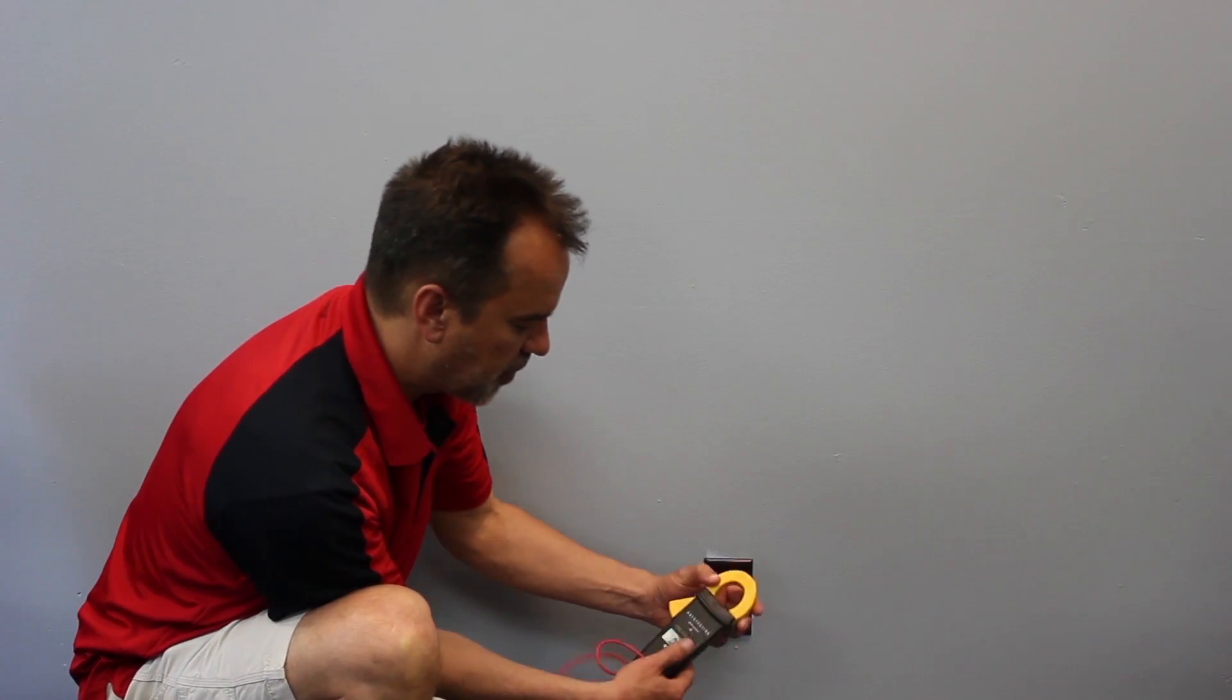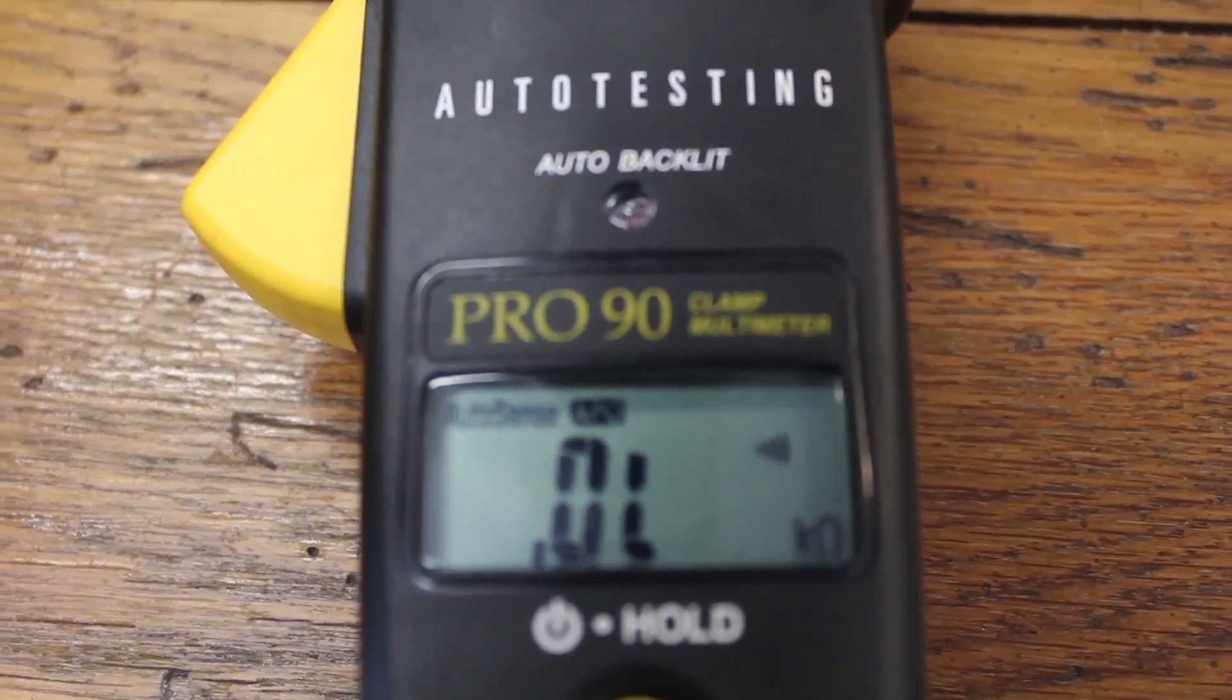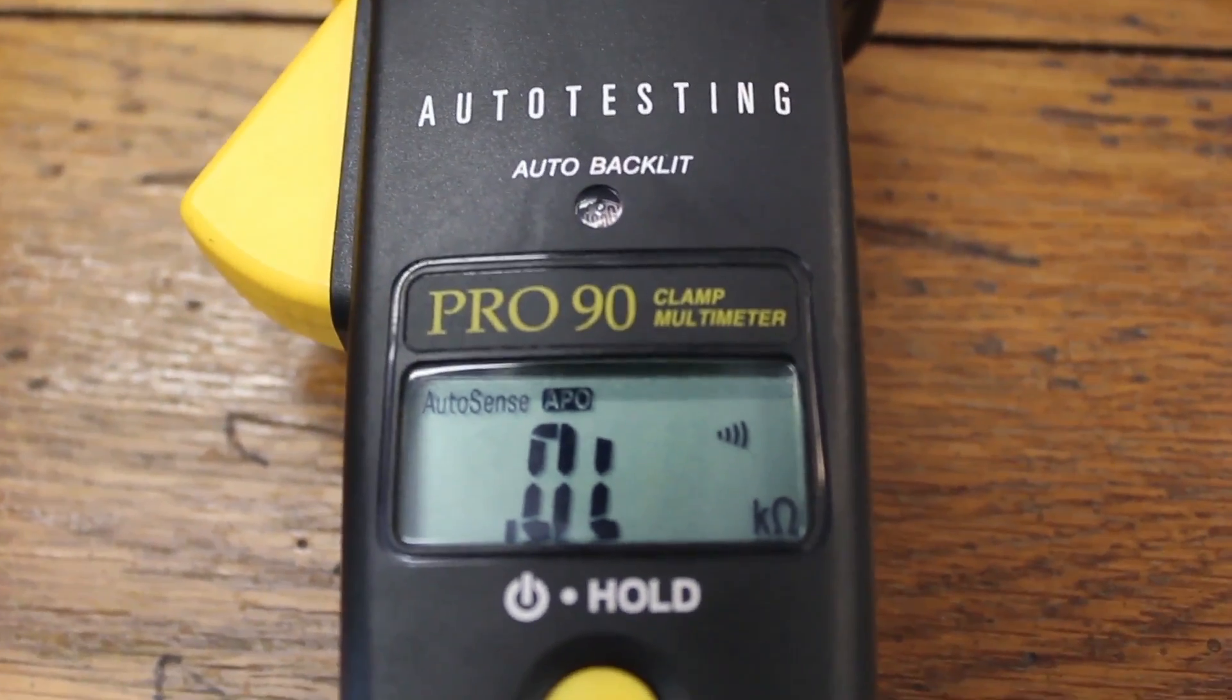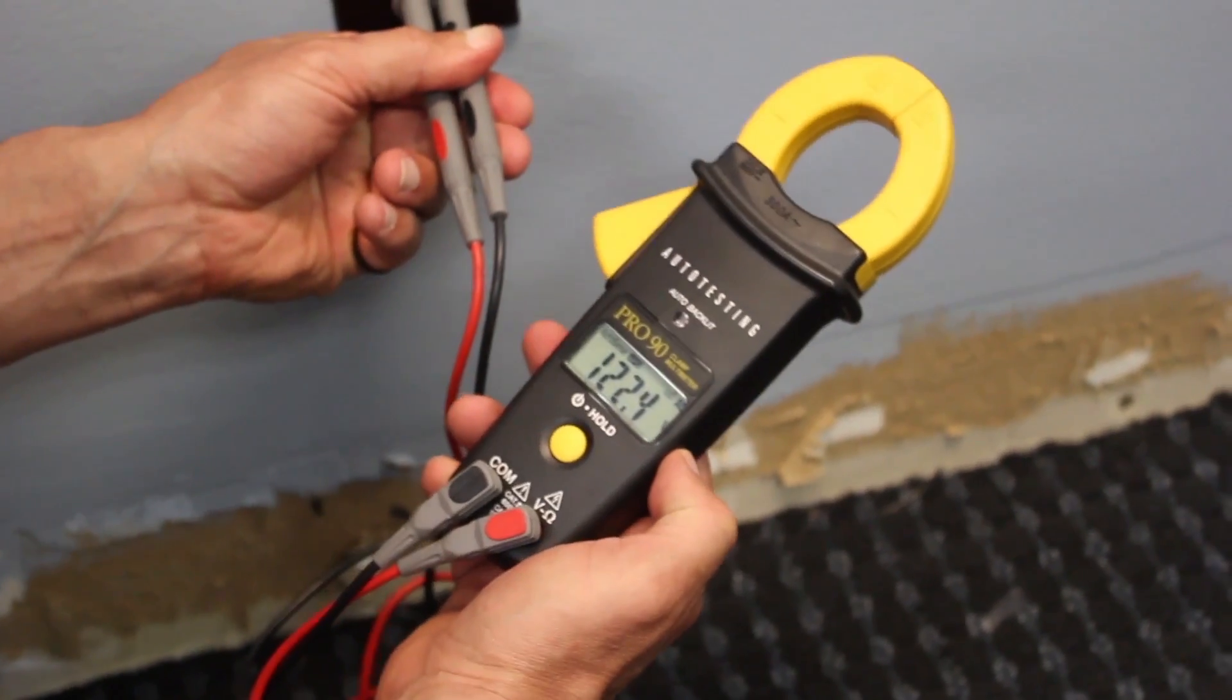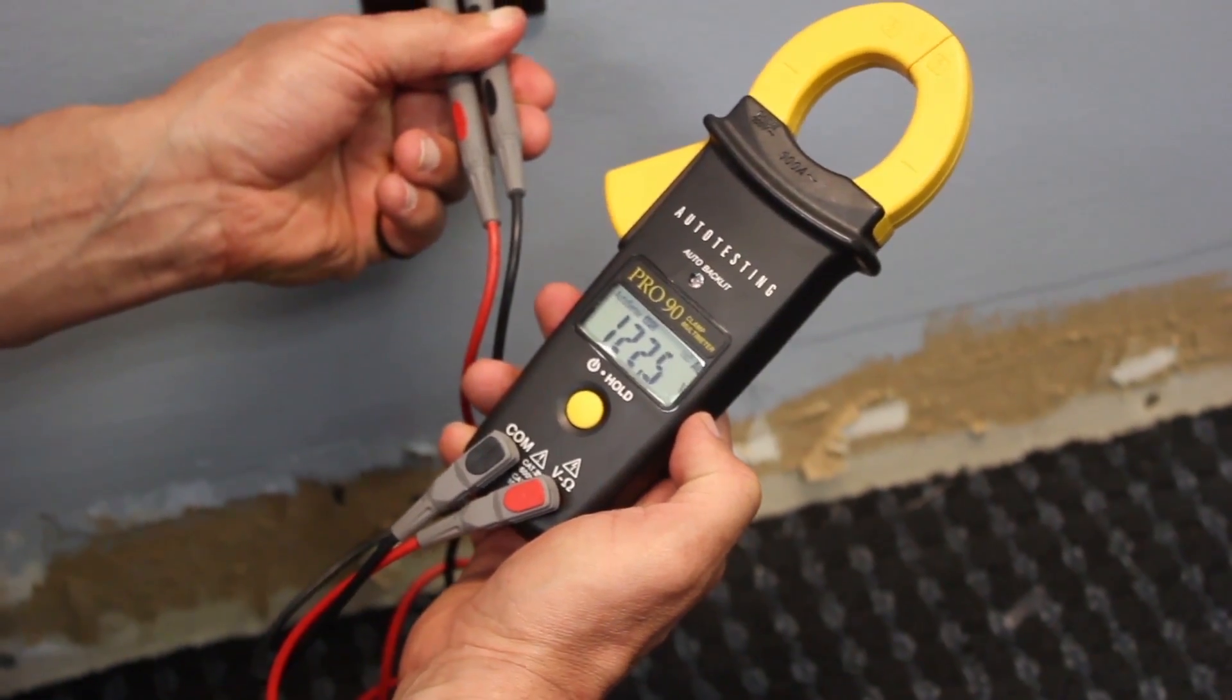There's also multimeters like this one. It's called our Pro 90 and it is completely automatic. I don't have to dial anything on it. Same thing, insert those leads, 122.5.